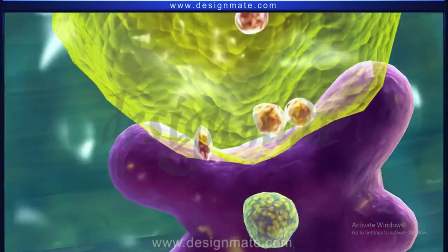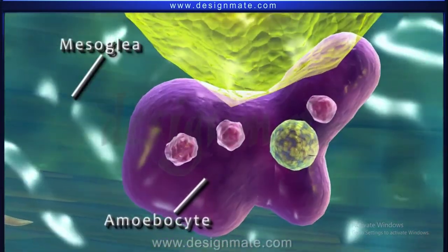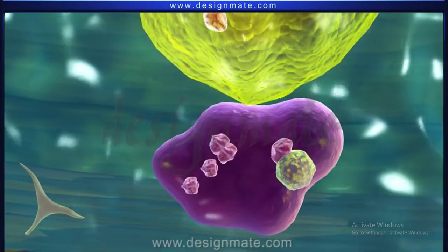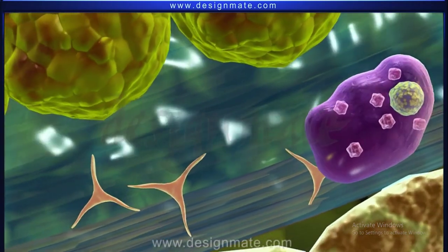It is passed on to amoebocytes which are seen moving around in the Mesoglea. These amoebocytes digest the food and carry it to other parts of the body.